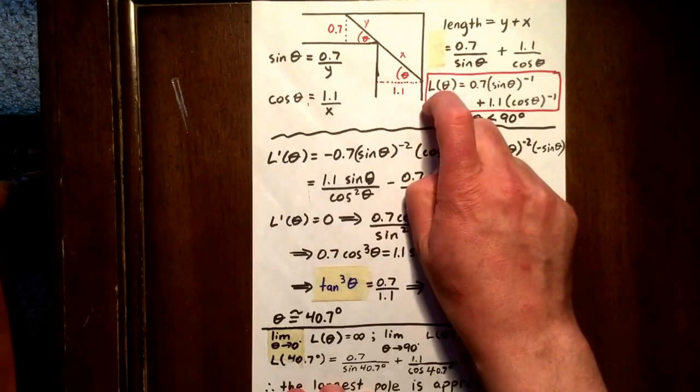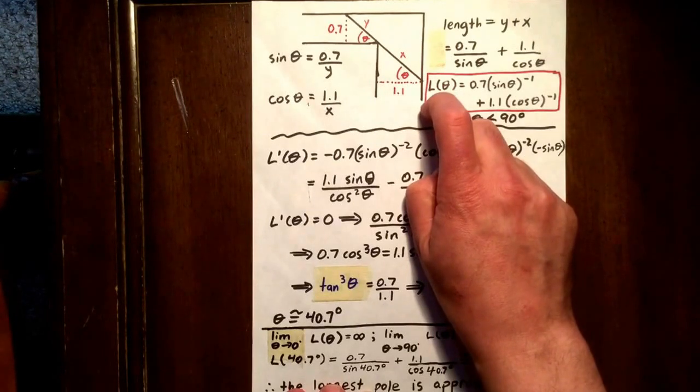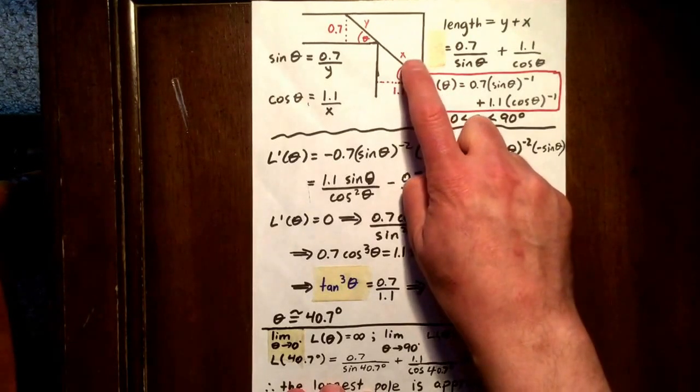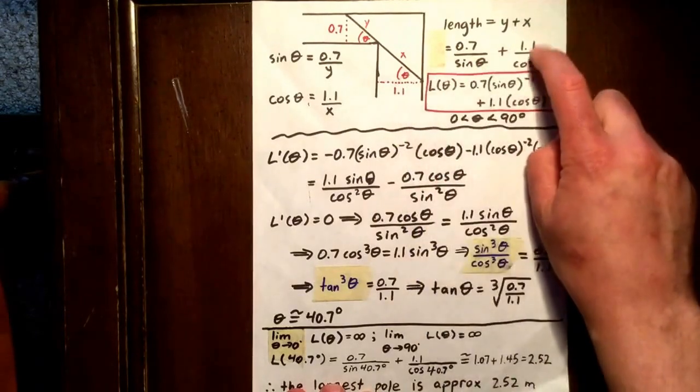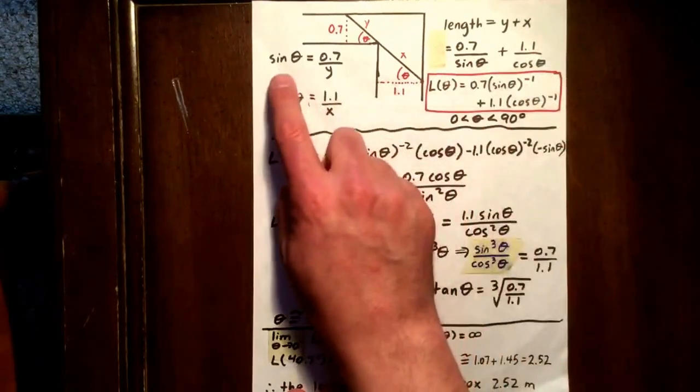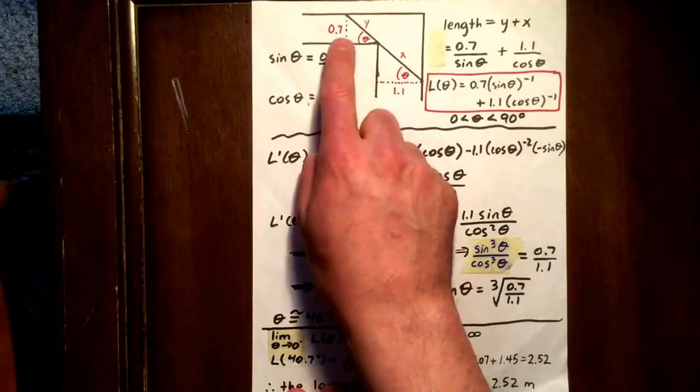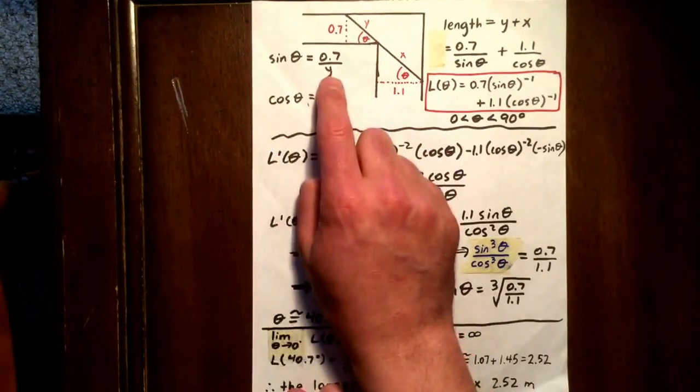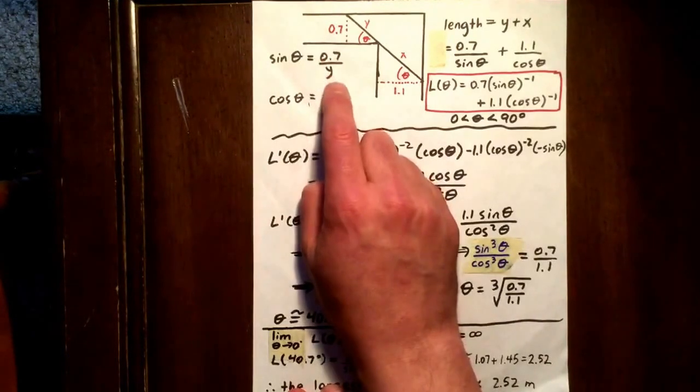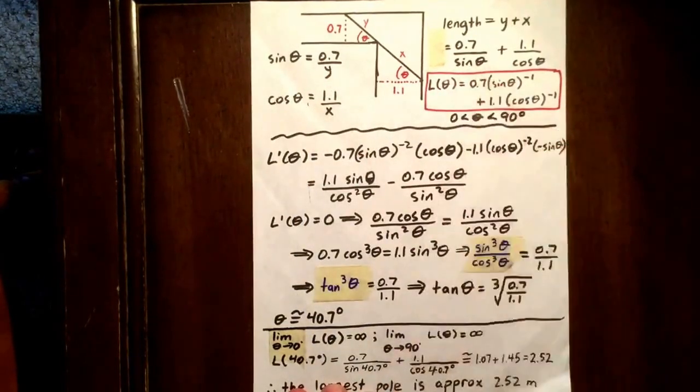Similarly, since the sine of theta is 0.7 over Y, we can say that Y is equal to 0.7 over the sine of theta.